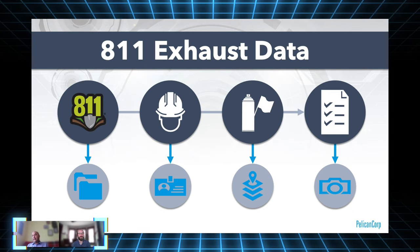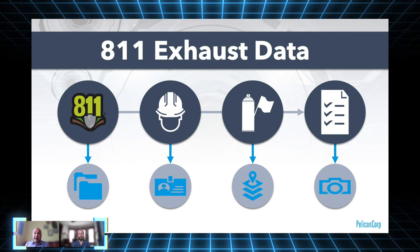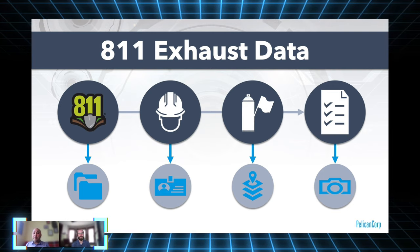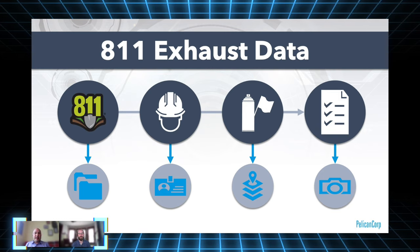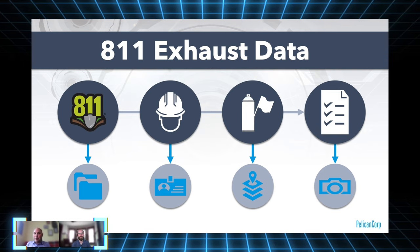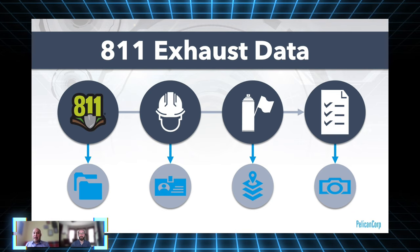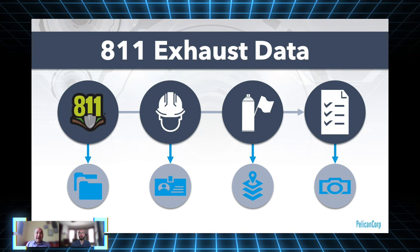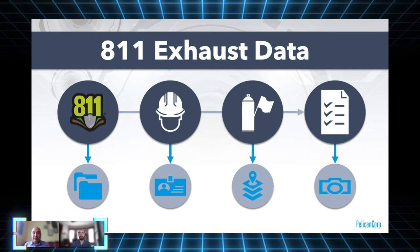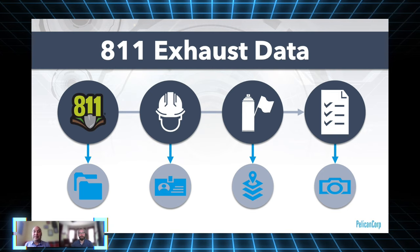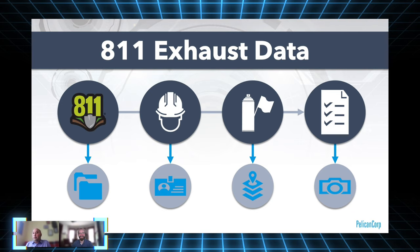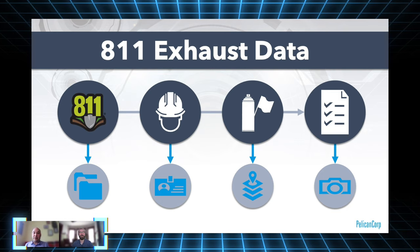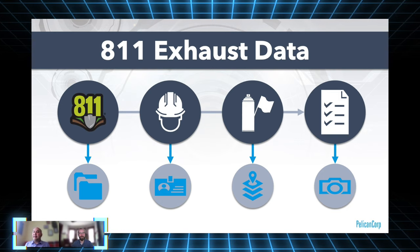We've got a huge amount of historical data there giving us the who, what, when, where of all of these tickets. There's historical volume information to know when we're busy and when we're not. That's something that fast food restaurants, for example, use to understand their historical peaks and valleys so they can plan staffing and inventory. But we have that information in 8-1-1. We know when work gets done, there's information about who's doing it and the personnel who was present.